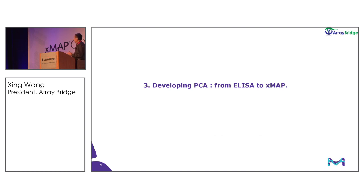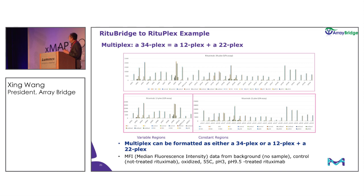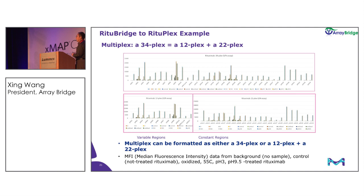Now I'll talk about the bridging study for this technology from the traditional ELISA assay to the XMAP. This is a collaboration between Allbridge and MilliporeSigma; Dr. Wen-Rong Lee did this work. She built the product in two different formats: one combining the 34 different addressable antibodies together to cover the whole mAb molecule, and another format separating the variable region 12 antibodies and the constant region 22 antibodies. The purpose was to see whether mixing the 34 different antibodies would have any interference, and the result showed no noticeable interference from mixing the beads.